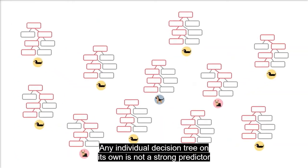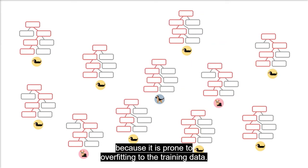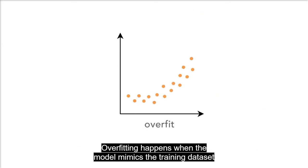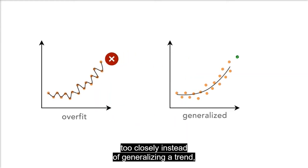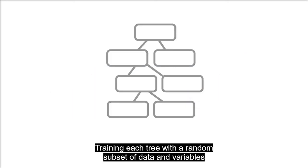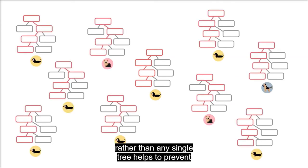Any individual decision tree on its own is not a strong predictor because it is prone to overfitting to the training data. Overfitting happens when the model mimics the training dataset too closely instead of generalizing a trend, making it so that the model can only predict the data it was trained with. Training each tree with a random subset of data and variables, and using the entire forest to generate a final prediction, rather than any single tree, helps to prevent overfitting to the training data.